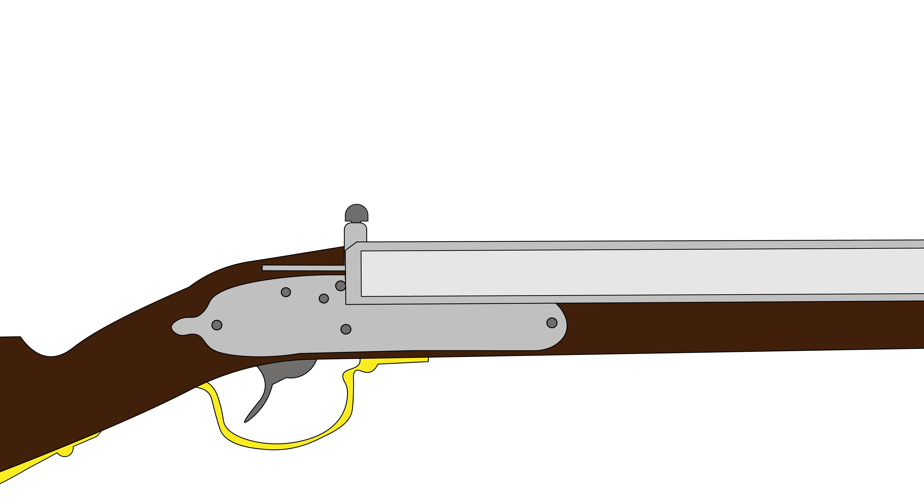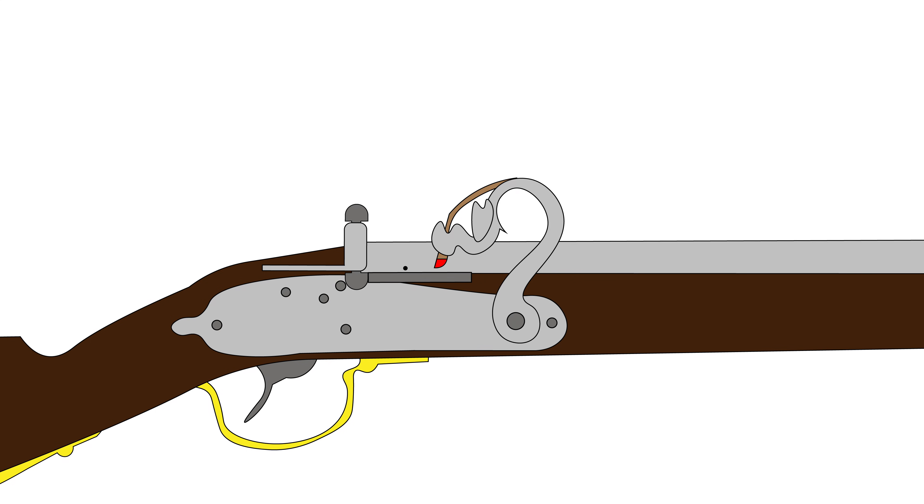Firing the gun by just pulling a trigger or squeezing a lever allows the shooter to focus on the target by looking down the barrel, making the matchlock more accurate and easier to use than earlier handheld firearms.